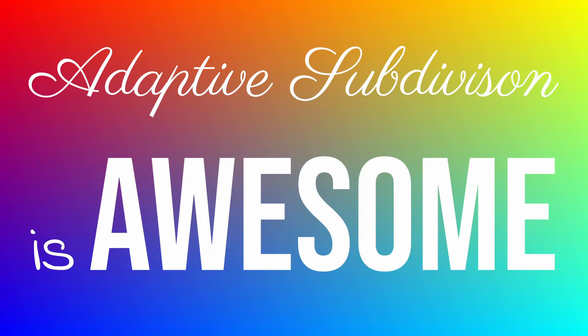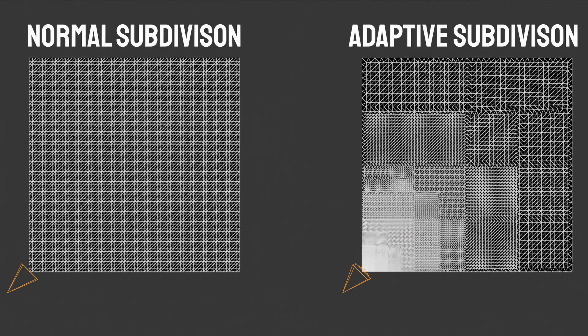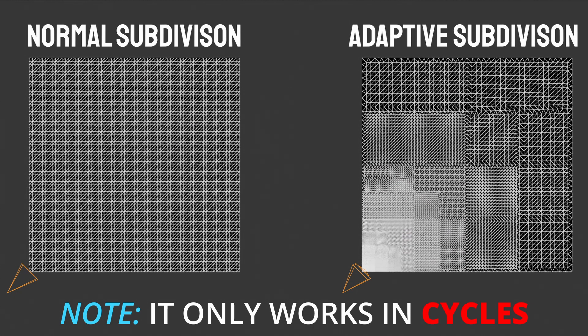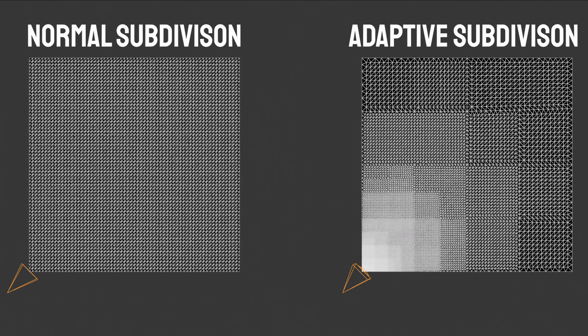Adaptive subdivision is awesome. It subdivides the geometry based upon its location to the camera, so the parts that are closer to the camera will be subdivided more than the parts that are further away. By using micro polygon displacement, which is a feature that uses adaptive subdivision to displace the geometry in renders, you can achieve incredible details.